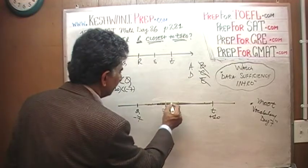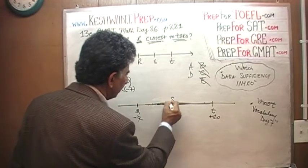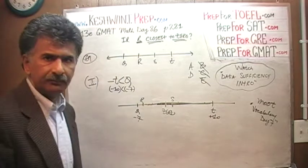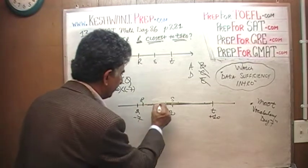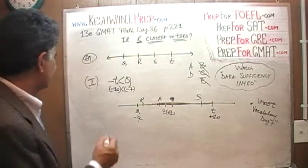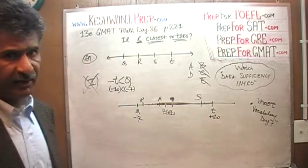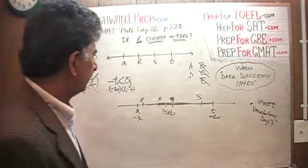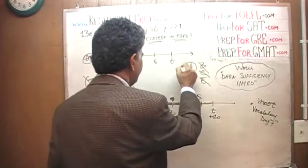It may be the S that is closer. S might be here, and R might be here. Or the other way around. R might be here, and S might be way over here. We really can't tell. Second statement does not do the job. Because the second statement by itself does not do the job, the answer is A. The answer is A.